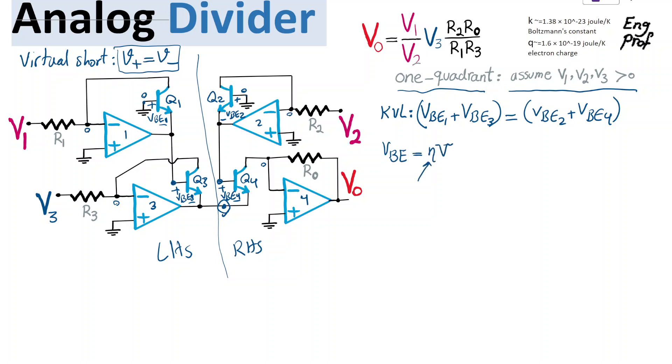is just eta VT, or this is the ideality factor. VT is thermal voltage, so this one is the thermal voltage, KT over Q, basically. So KT, K Boltzmann constant, and Q is the electron charge.